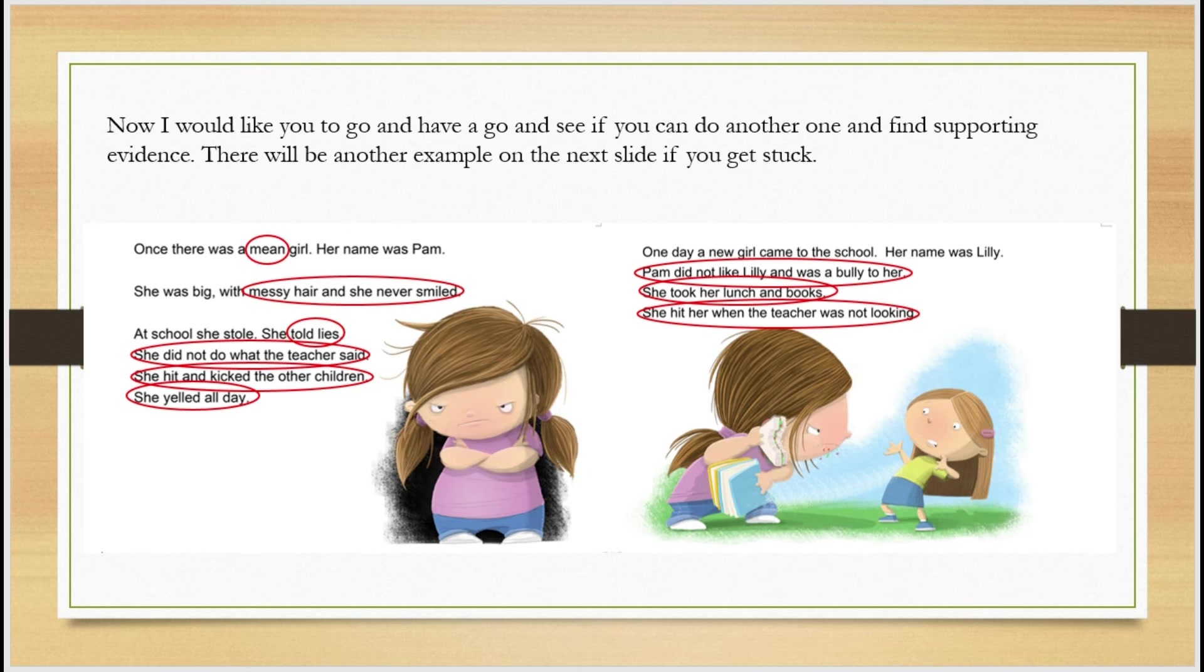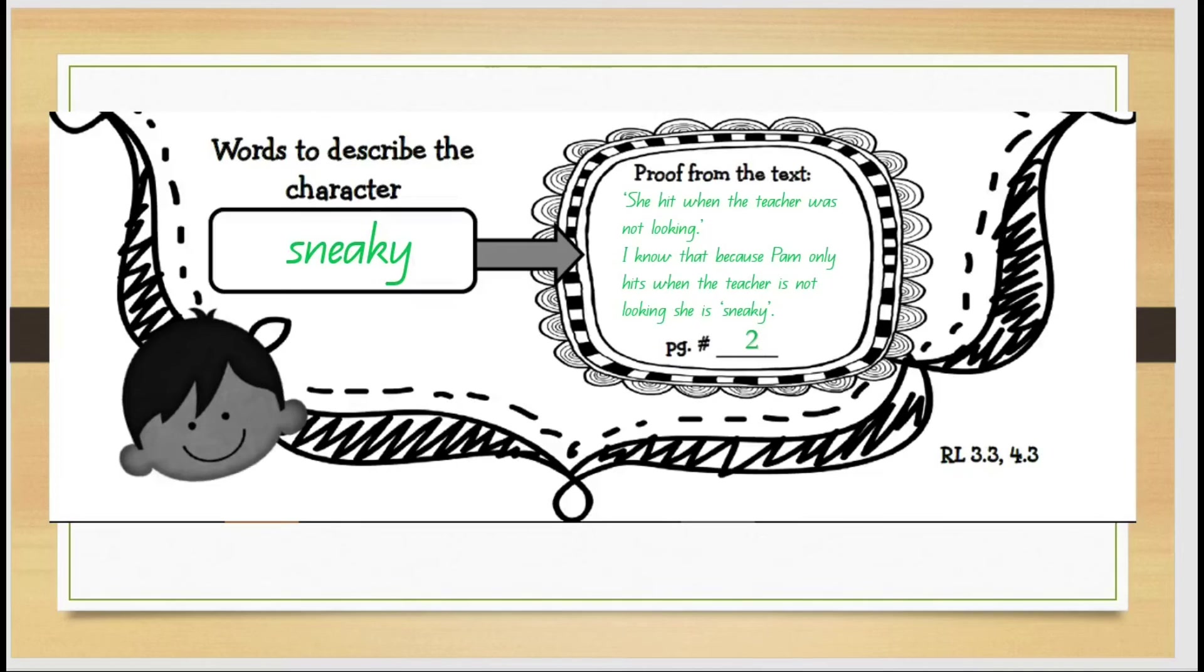The next example is the word sneaky to describe the character of Pam. The proof from the text that I've used is she hit when the teacher was not looking. To me I know that because Pam only hits when the teacher is not looking she is sneaky. If she were to do it when the teacher wasn't looking, to me she's trying to hide it. She's trying to be sneaky. She doesn't want the teacher to know that she's hitting people because she knows she would probably get into trouble.